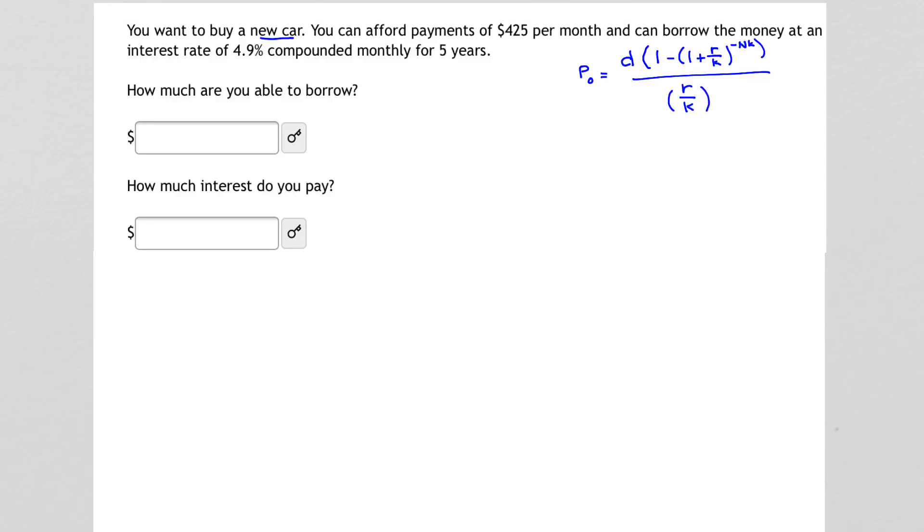Now, what are all these pieces in that formula? Well, D is our monthly payment. For the problem, we're given that our monthly payment is $425. R is our interest rate. Again, we're given that interest rate. It's 4.9% or 0.049.